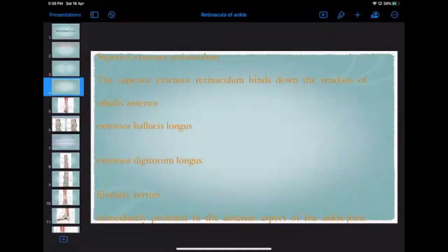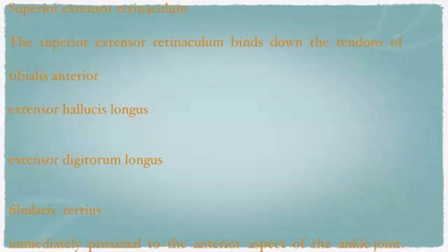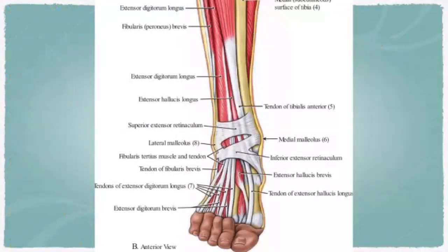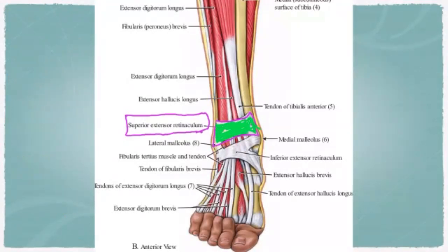The superior extensor retinaculum is a thickened deep fascia. All the tendons of the muscles of the leg which pass to the foot are bound by this structure. These include tibialis anterior, extensor hallucis longus, and extensor digitorum longus.